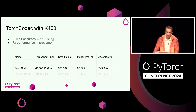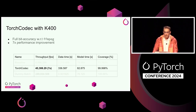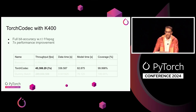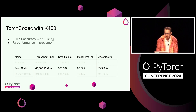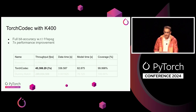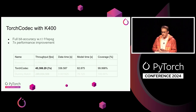To test TorchCodec on a real-world example, we came back to the K400 workload Andrew mentioned. TorchCodec has full bit accuracy with respect to FFmpeg and is seven times faster than TorchVision. Now I'll hand it back to Andrew for the rest of the talk.